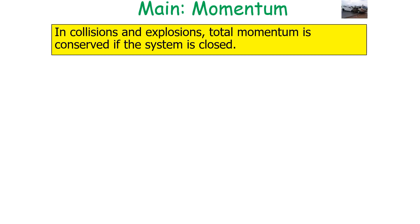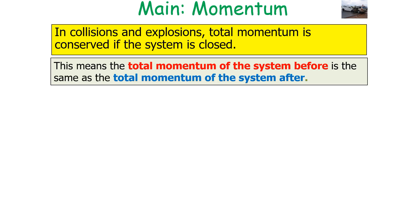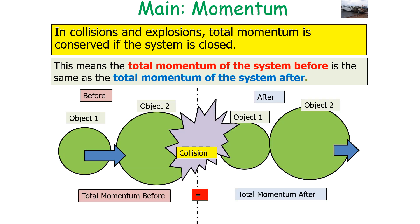In collisions and explosions, the total momentum is conserved if the system is closed. This means the total momentum of the system before is equal to the total momentum of the system after. So before the interaction takes place the total momentum equals the total momentum of the system after the interaction has taken place.